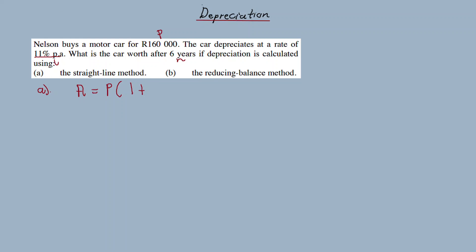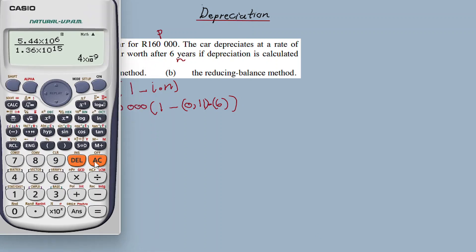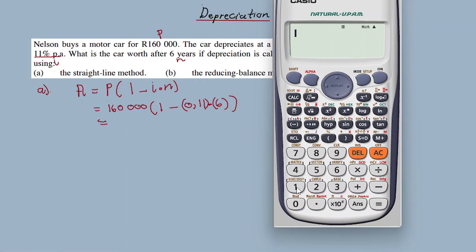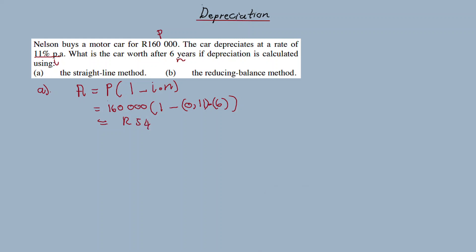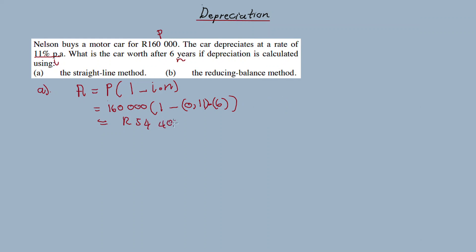Using the straight line formula: A = P(1 − i·n). P is 160,000; the interest rate i is 0.11; and the number of years n is 6. So A = 160,000 × (1 − 0.11 × 6). Calculating this, the value of this car using the straight line method is 54,400 rand. This is our answer.